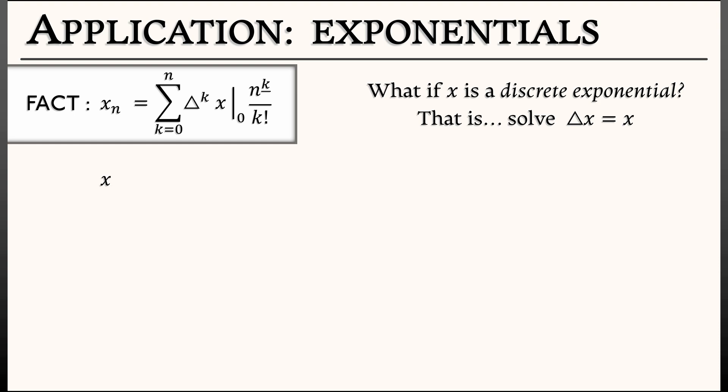We know that because the derivative of x is x, all the higher derivatives of x are still equal to x. So when we substitute that in, we get that xn is the sum k goes from 0 to n of x evaluated at 0 times n to the falling k over k factorial. That works out really well. What we're going to do is do that evaluation. x evaluated at 0 is just x0. It's a constant. Pull it out of the sum.